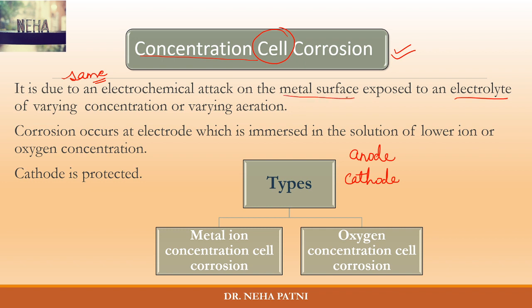What happens here is that the metal surface is exposed to the electrolyte and a cell develops based on varying concentration of metal ion or varying concentration of oxygen. Metal ion concentration cell corrosion means the anode and cathode areas develop due to different concentrations of metal ion. In oxygen concentration cell corrosion, the cell develops due to different concentrations of oxygen — some areas have good oxygen, some have poor oxygen.